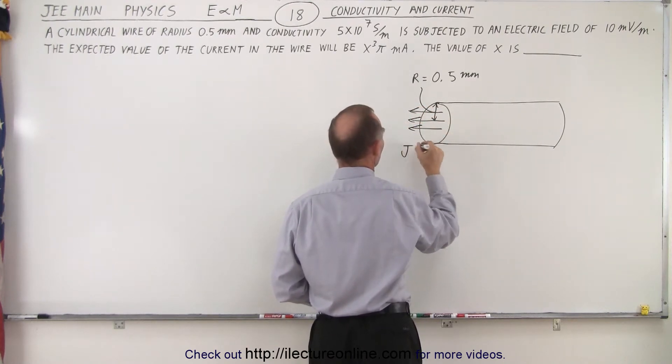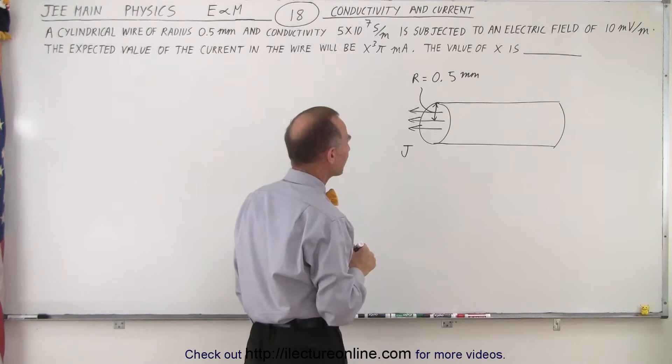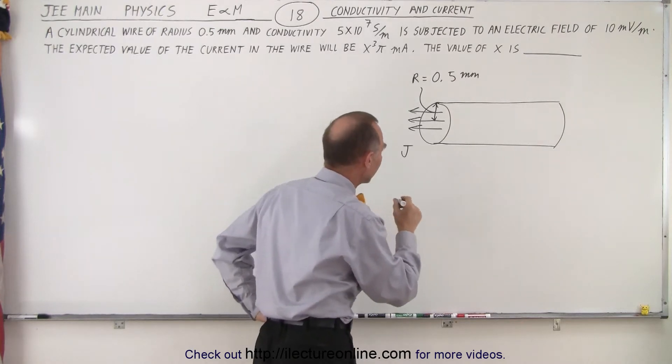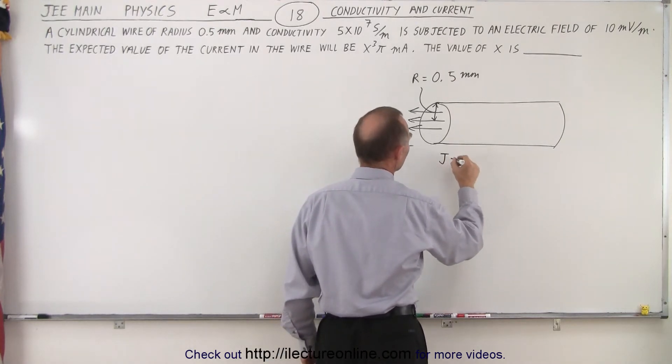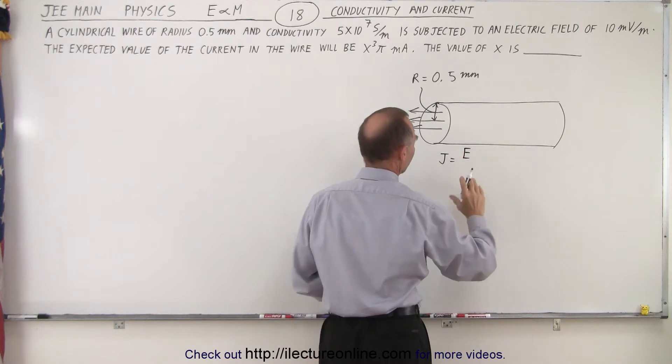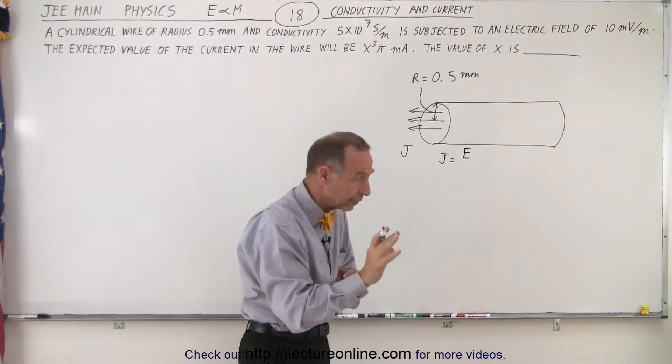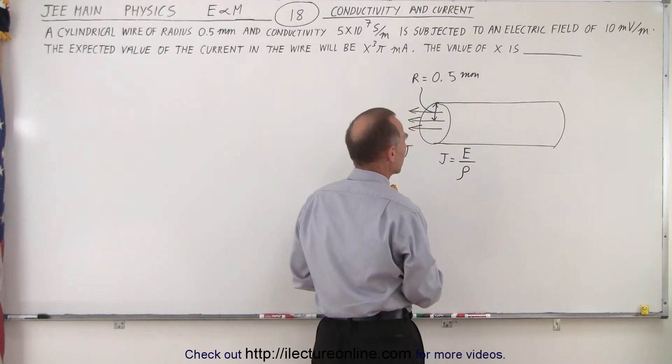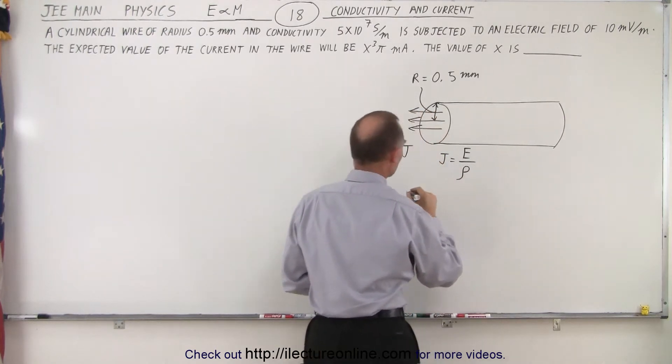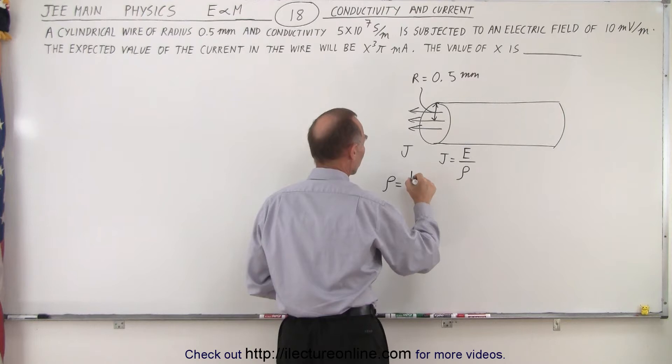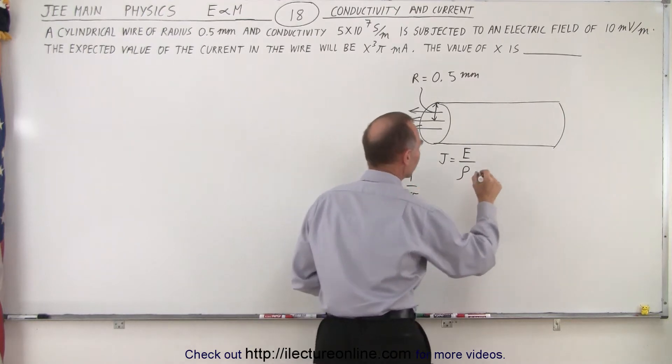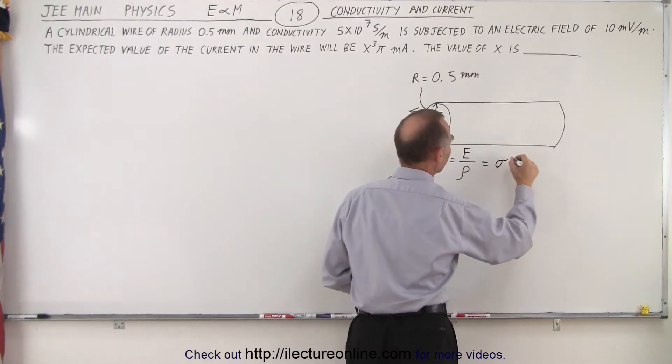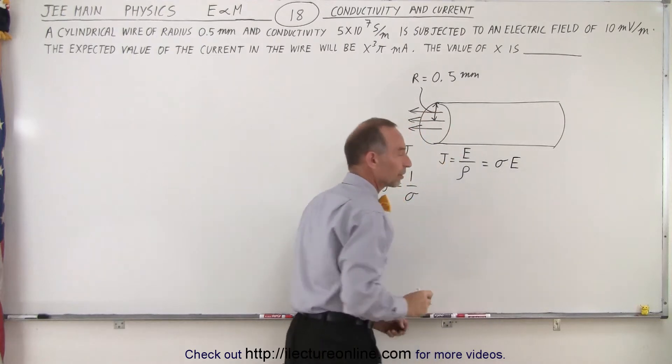We're going to have a certain amount of current density j, and the current density j can be defined as the strength of the electric field pushing the current through the wire divided by the resistivity. However, since we know that resistivity is equal to 1 over conductivity, we can also say that this is equal to the conductivity times the strength of the electric field.